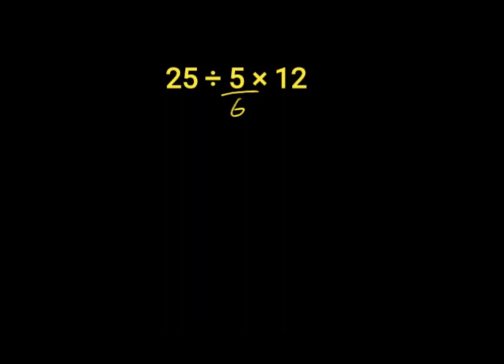25 divided by 5 over 6 times 12. 6 into 1, 6 into 12 is 2. Then we are left with 25 divided by 5 times 2.